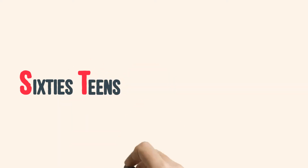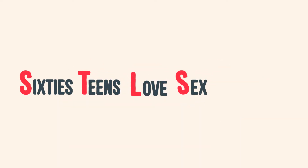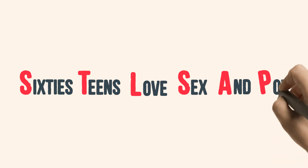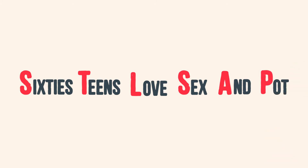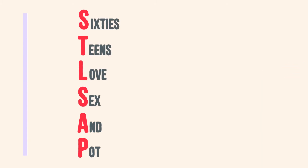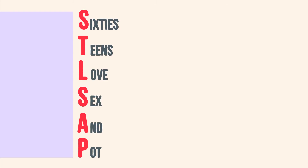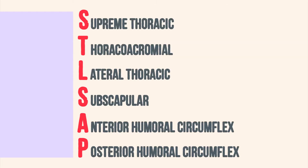The mnemonic is: Sixties, Teens, Love, Sex, and Pot. Each first letter of each word corresponds to each branch in order coming off the axillary artery.